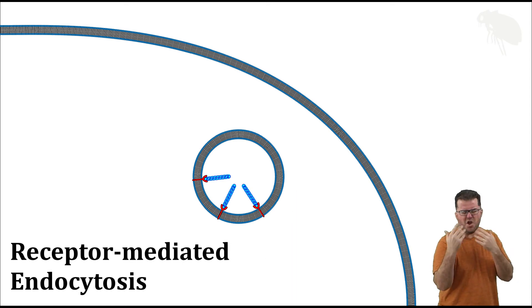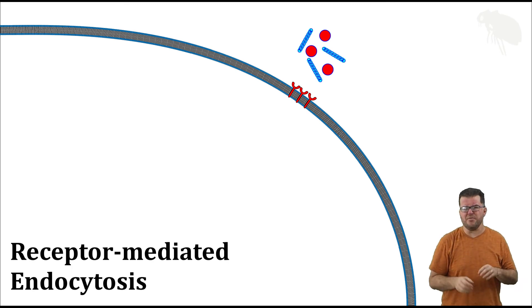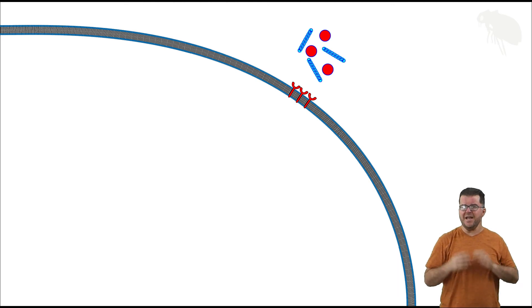And just one final quick note: usually that region of the membrane where those receptors are located is coated on the interior by a protein layer, usually a protein like clathrin. I'm not showing that here or getting into it, because that's sort of a next step in the learning process. And what I want you to focus on here is just the essence of what receptor-mediated endocytosis is. And there you have all three forms of endocytosis.